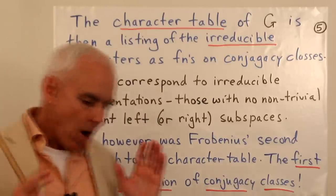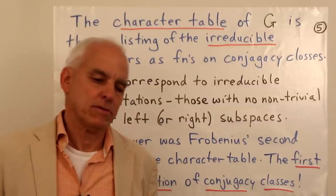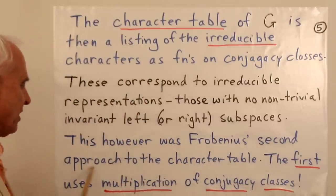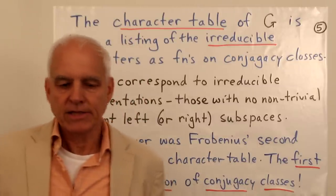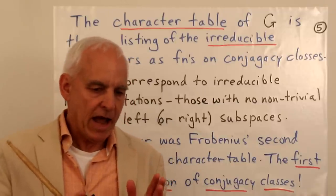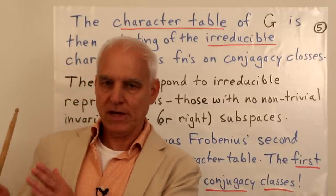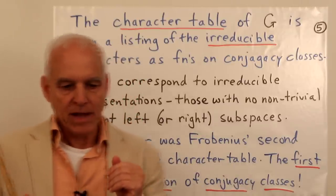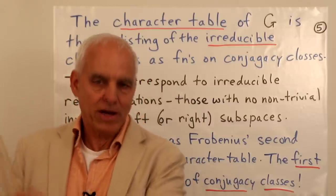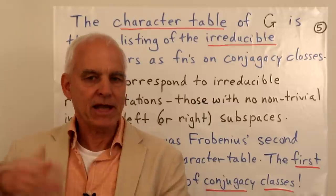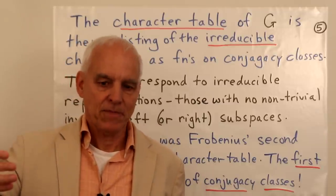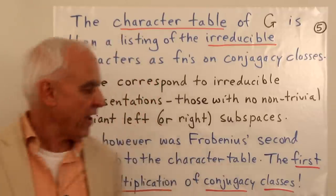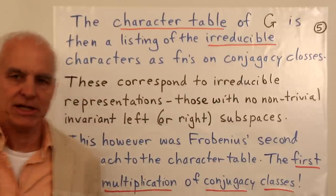The character table of a group G lists irreducible characters as functions on the conjugacy classes. These correspond to irreducible representations — ones where no proper subspace is preserved under all group element actions. We're seeing the building blocks: more general representations decompose into sums of irreducible ones. This is Frobenius' second approach to the character table; he had a prior, original intuition about characters that connects to what I'm calling diffusion symmetry. It has to do with multiplication of conjugacy classes.